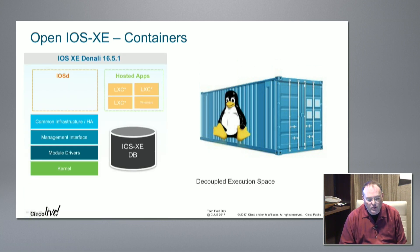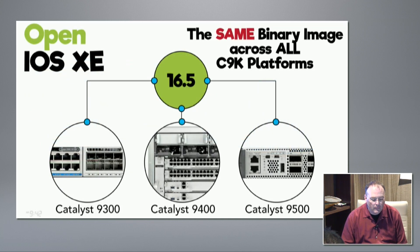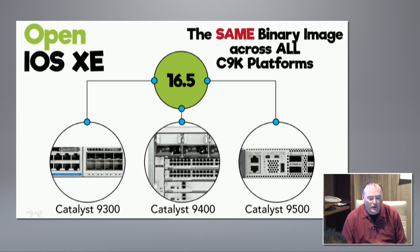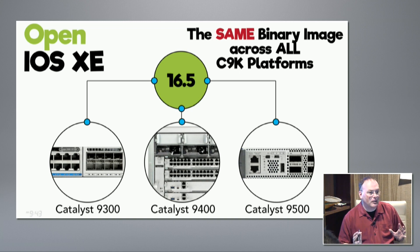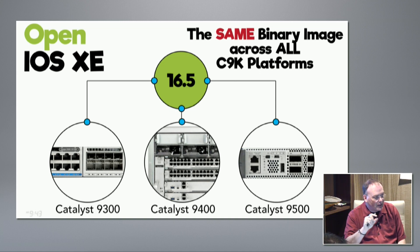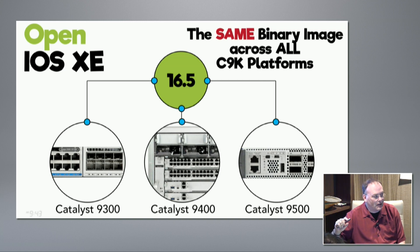Containerized apps are going to become very important going forward. Another really interesting thing about CAT 9K is that we run the same binary iOS image across all of our CAT 9K platforms — we have never done something like this before. It's the exact same binary file that runs on a stackable, on a chassis, and on a fixed aggregator.